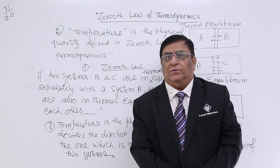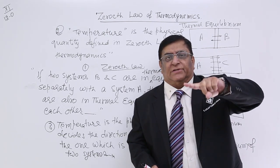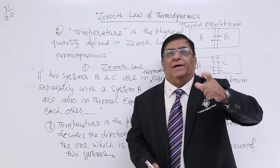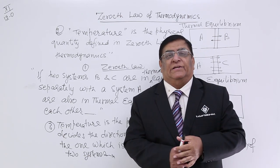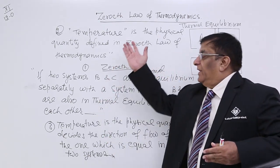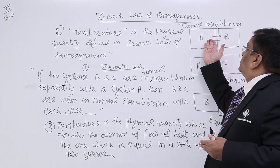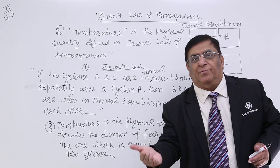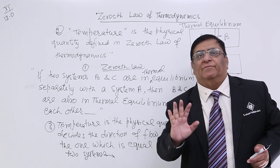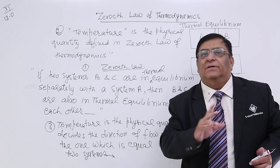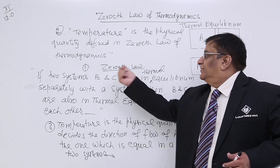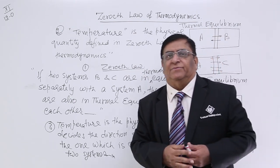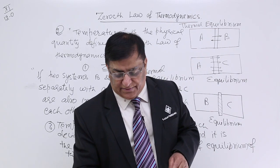Why is this law numbered zero? Because we discovered the first law and second law initially, and in those laws we mentioned the quantity temperature without defining what temperature is. Later we formulated this law about heat transfer which defines temperature. It should have come first, but the number 'first law' was already assigned to something else — therefore the number allotted to this law was zeroth. In the next lecture we will see the first law of thermodynamics. Thank you.